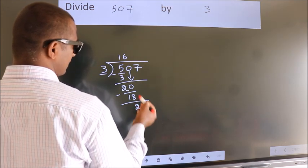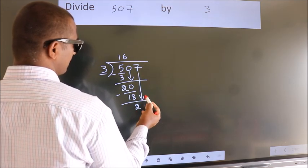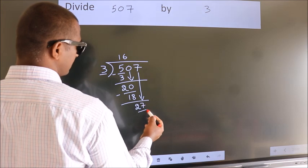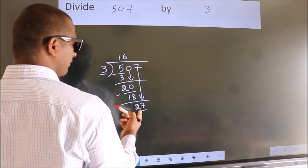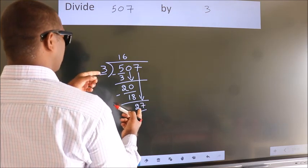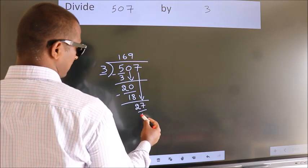After this, bring down the next number. Bring 7 down, so we have 27. When do we get 27 in the 3 table? 3 times 9 is 27.